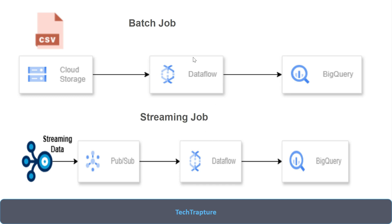In a batch job you load all records in one go. In a streaming job you load each record whenever you receive it.